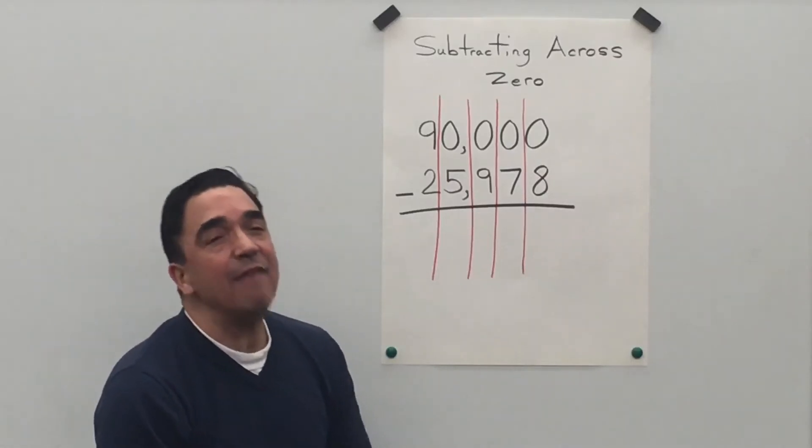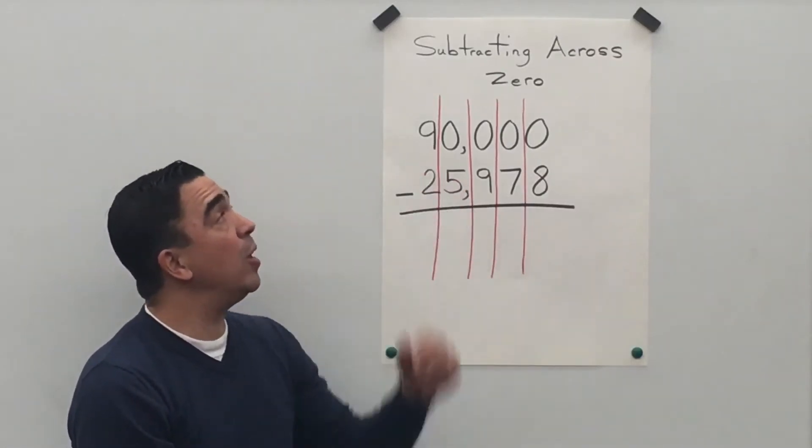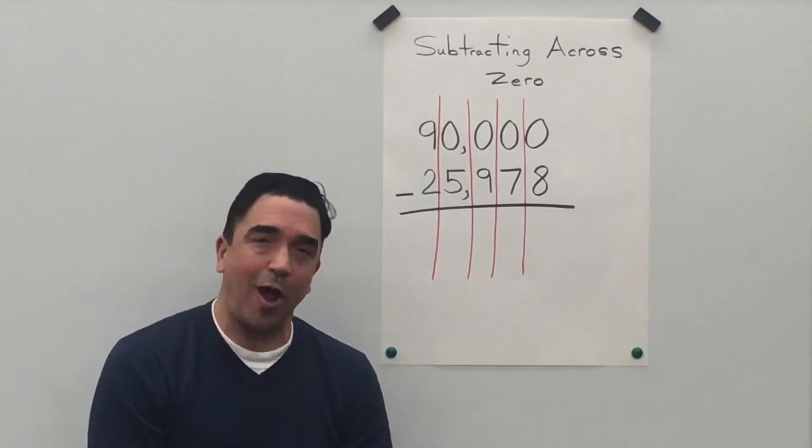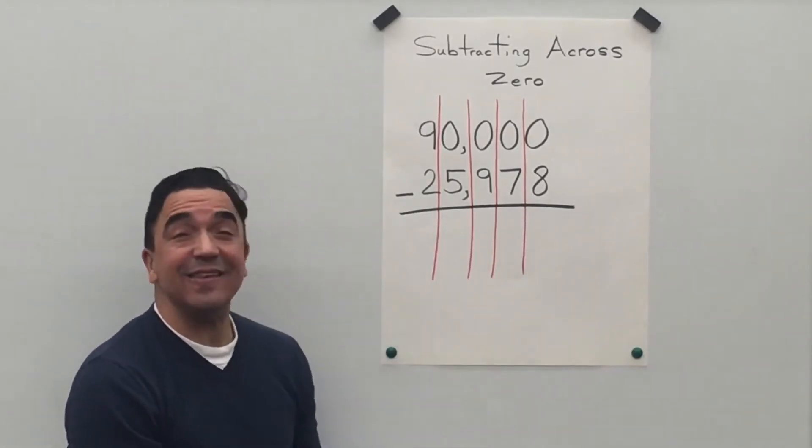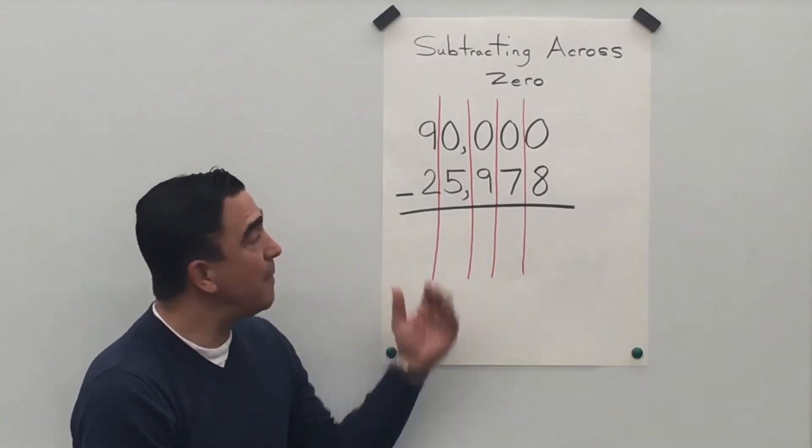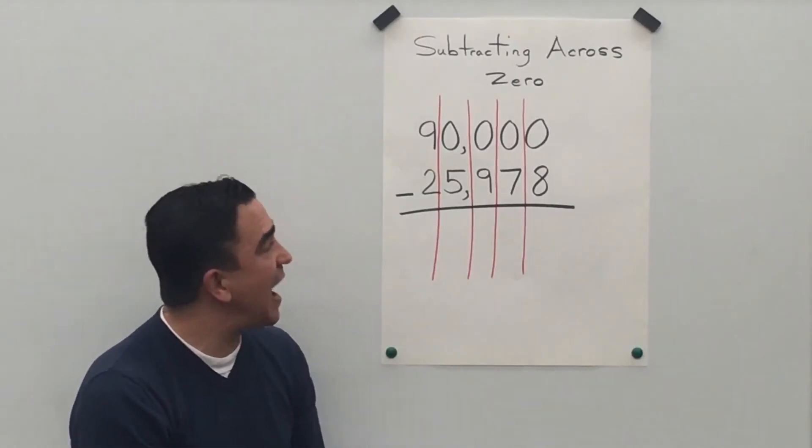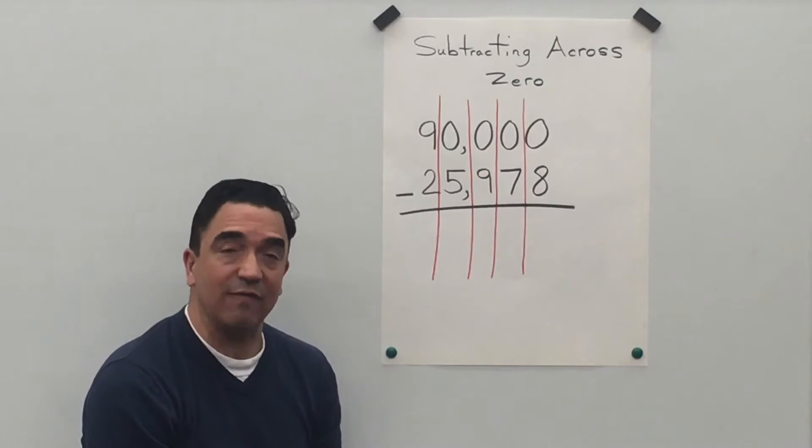Hi there, Coach Mike, and for today's lesson, we will be subtracting across zeros. Here's our problem: 90,000 minus 25,978.